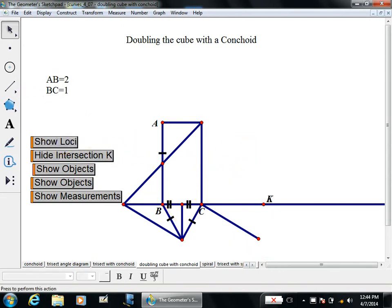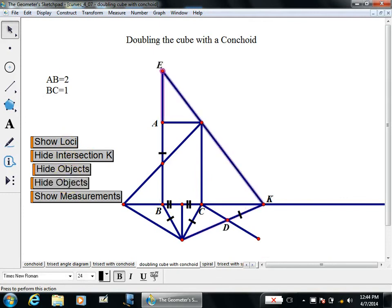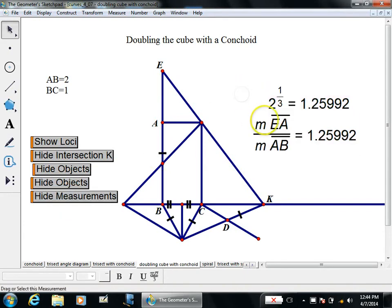And I draw, connect some dots and some more dots. I will have accomplished doubling the cube now. Because as you can see, this EA over AB is equal to the cube root of two. So the conchoid can be used for two of the three problems.